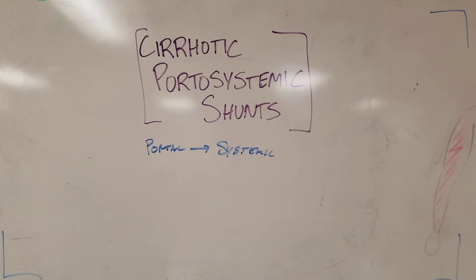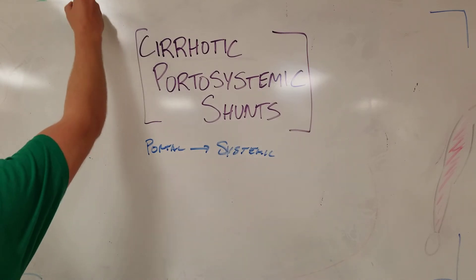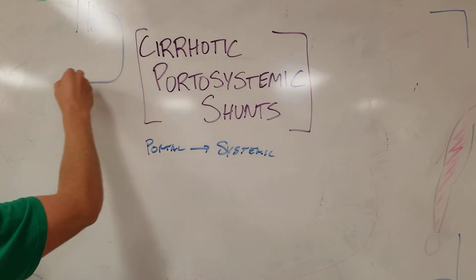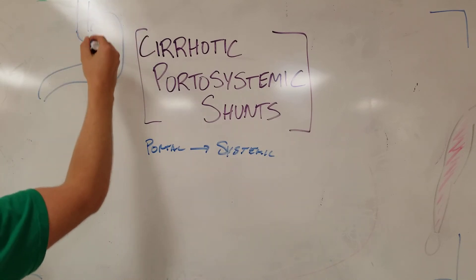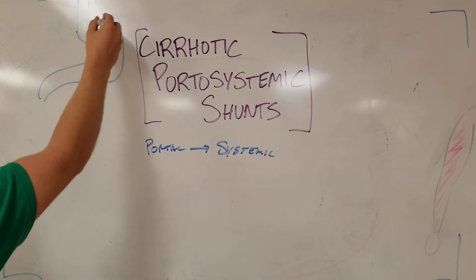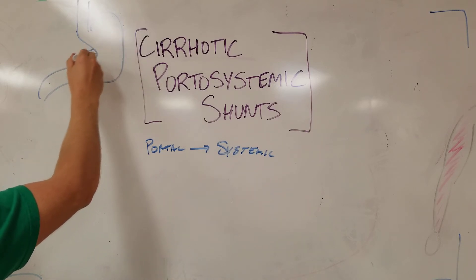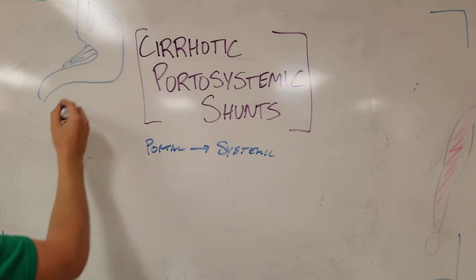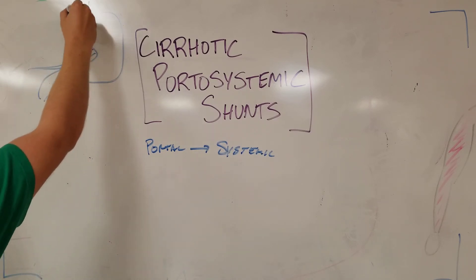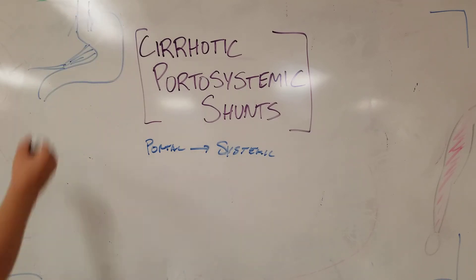The first one is the esophagogastric shunt. Here you can see your esophagus and stomach. What happens is rather than the portal blood returning back inferiorly, reaching the portal vein and splenic vein, it's actually going to go into these esophageal veins that then go up and back to systemic